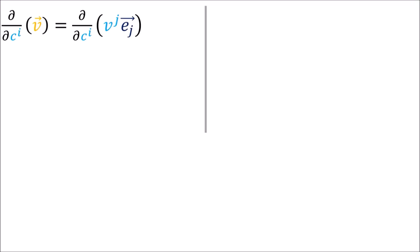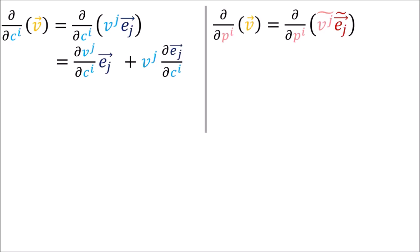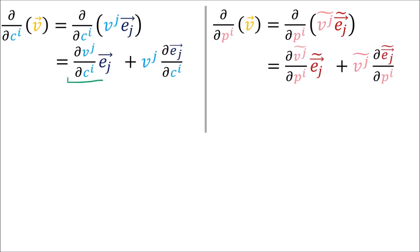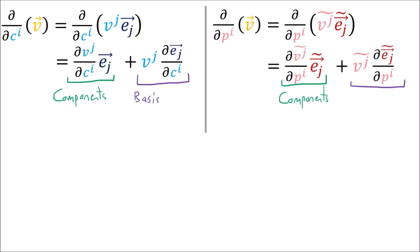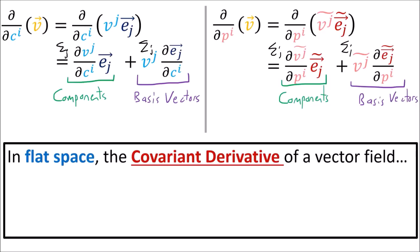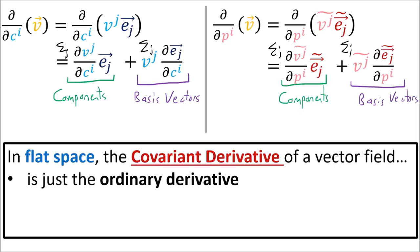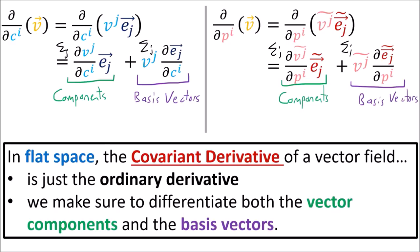This is the natural result of using the product rule when taking the derivative of a vector field. No matter which coordinate system we use, we always get terms for the component derivatives and terms for the basis vector derivatives. In Einstein summation notation, these involve a summation over j. So in flat space, the covariant derivative of a vector field is really just the ordinary derivative where we make sure to differentiate both the vector components and the basis vectors.